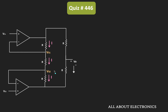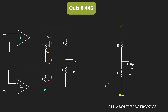Let's say the output of the first op-amp is equal to VO1, while the output of the second op-amp is equal to VO2. To find the output voltage, we first need to know VO1 and VO2. Once we know them, we can use the superposition theorem to find the output voltage. So let's find VO1 and VO2.